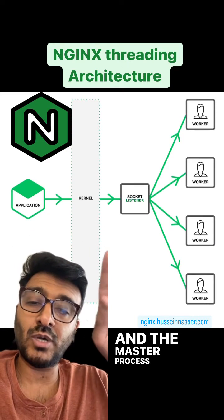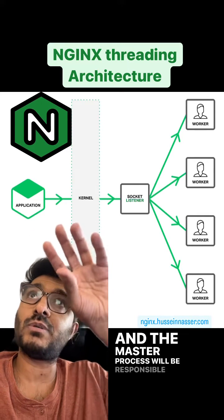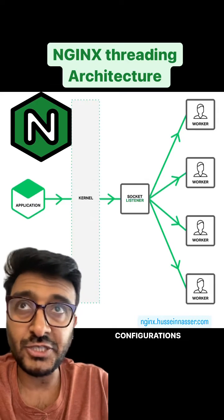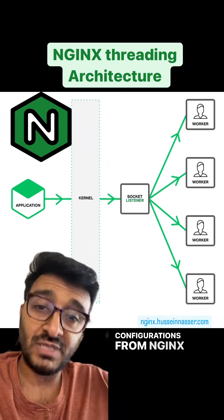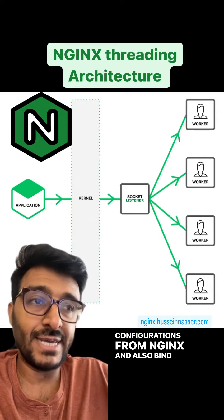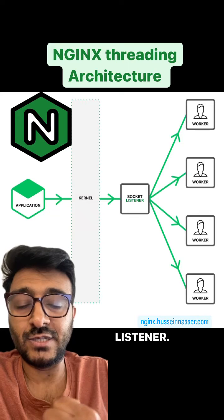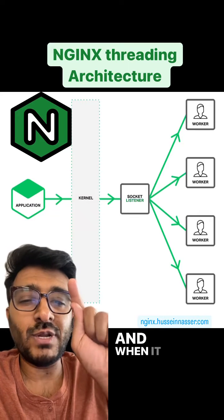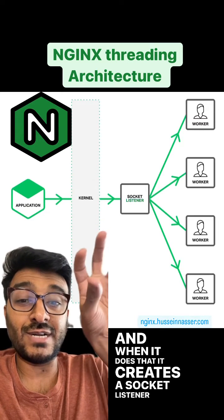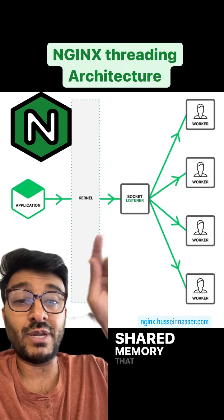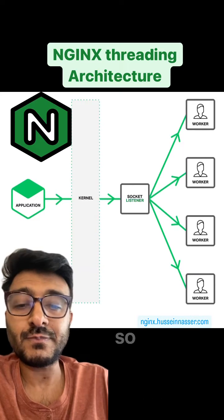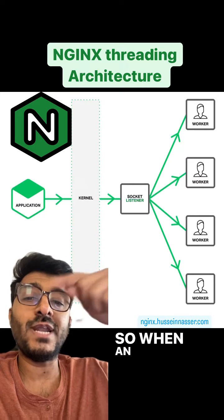The master process is responsible for reading configurations from NGINX and also binding to that socket listener. When it does that, it creates a socket listener in shared memory that is shared with all the worker processes.